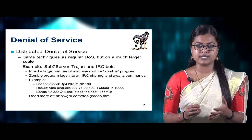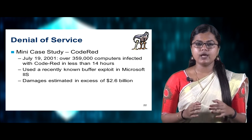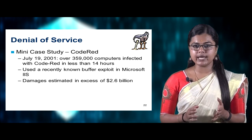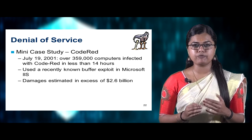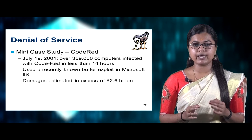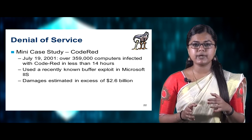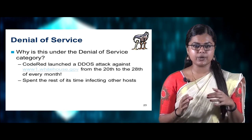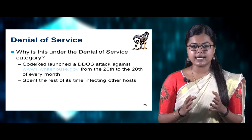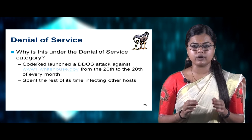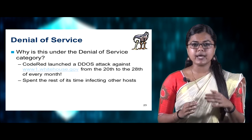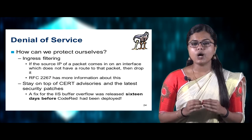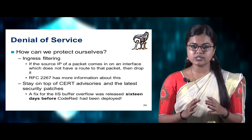Now let's look at a mini case study — Code Red. On July 19, 2001, over 359,000 computers were infected with Code Red in less than 14 hours. It used a recently discovered buffer overflow exploit in Microsoft IIS, and the damage caused was estimated at over 2.6 billion dollars. Code Red comes under the DoS category because it launched a DoS attack against www.whitehouse.gov from the 20th to the 28th of every month, spending the rest of its time infecting other hosts.